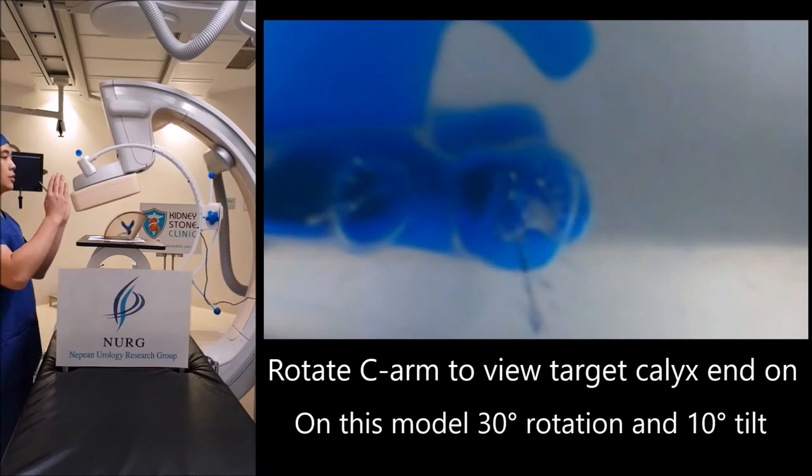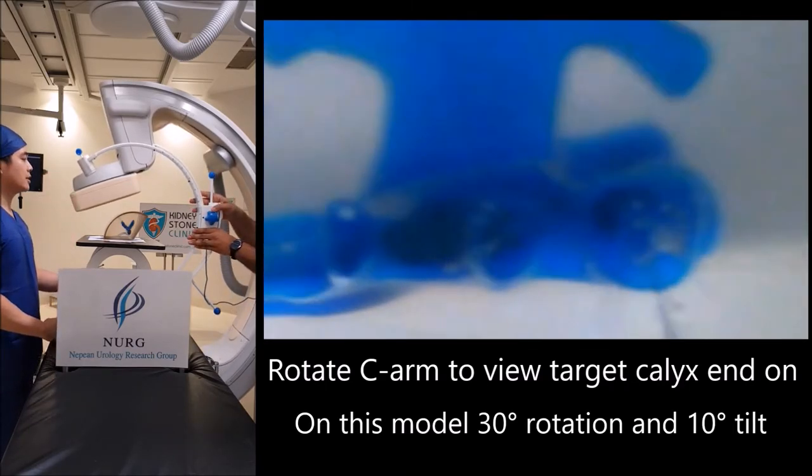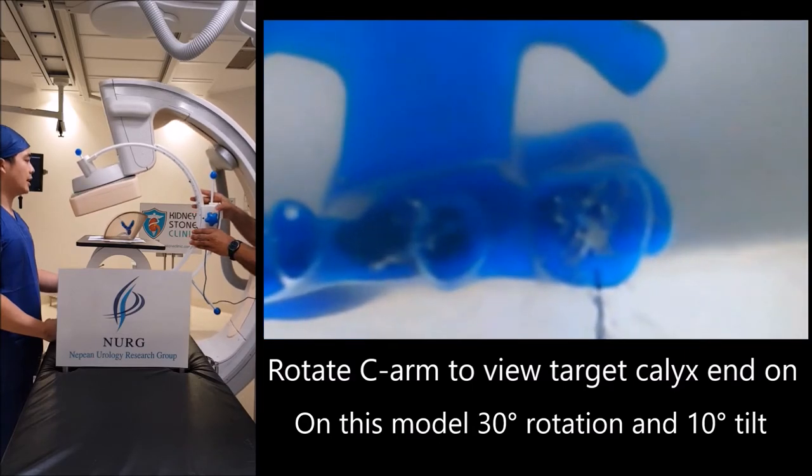In this model, the target calyx requires 30 degrees of rotation and 10 degrees of tilt.